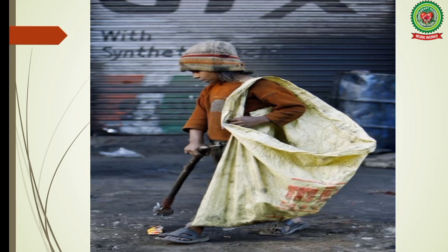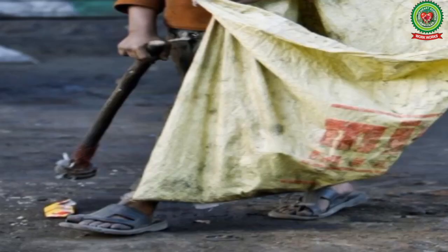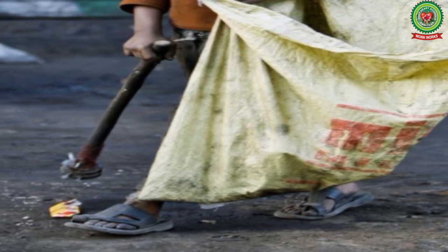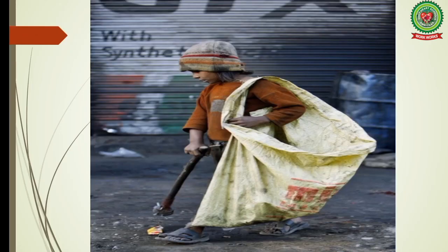Have you ever seen boys and girls moving around the roads with a stick in their hands? They constantly put their stick in garbage. Have you ever thought why they do so — do they search for something? Actually, there is something attached to the tip of their stick. Can you tell me what it is? Well, it is a magnet, and they search for iron objects so that they can sell and earn money.